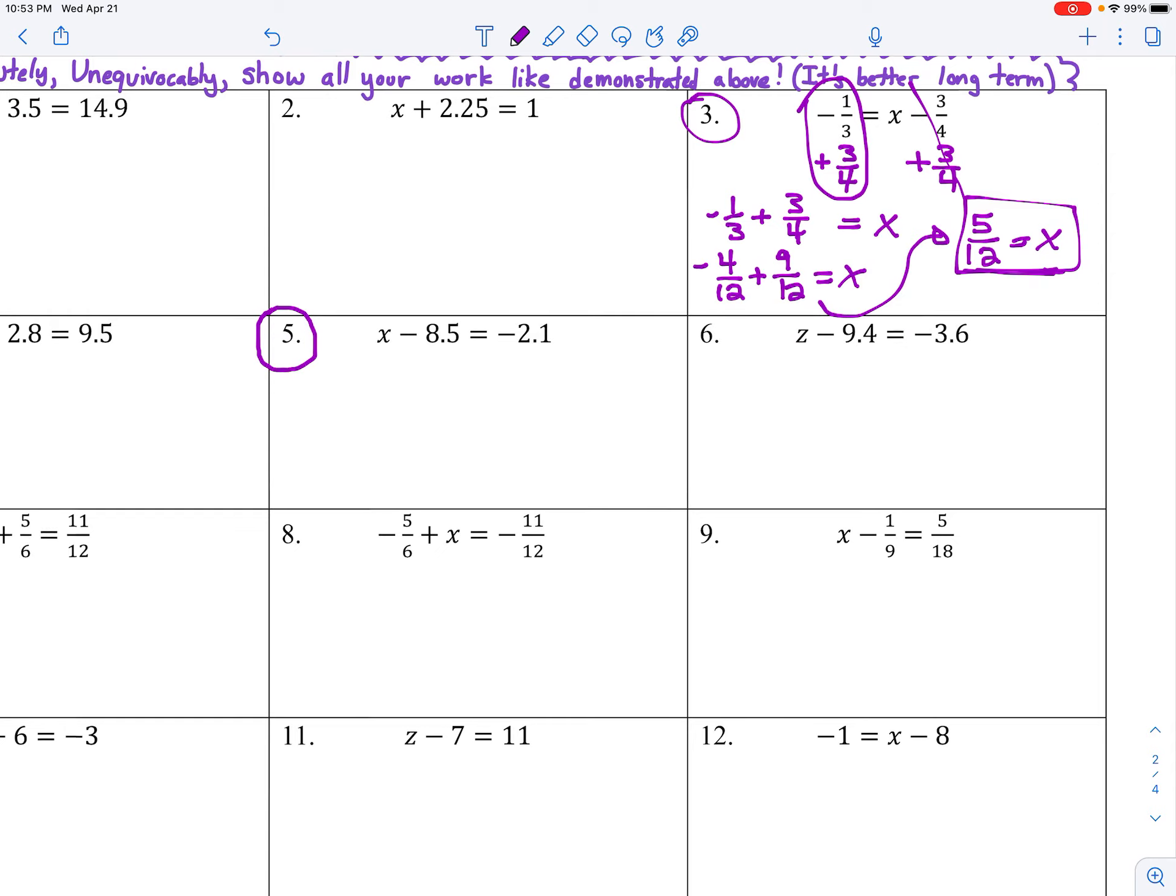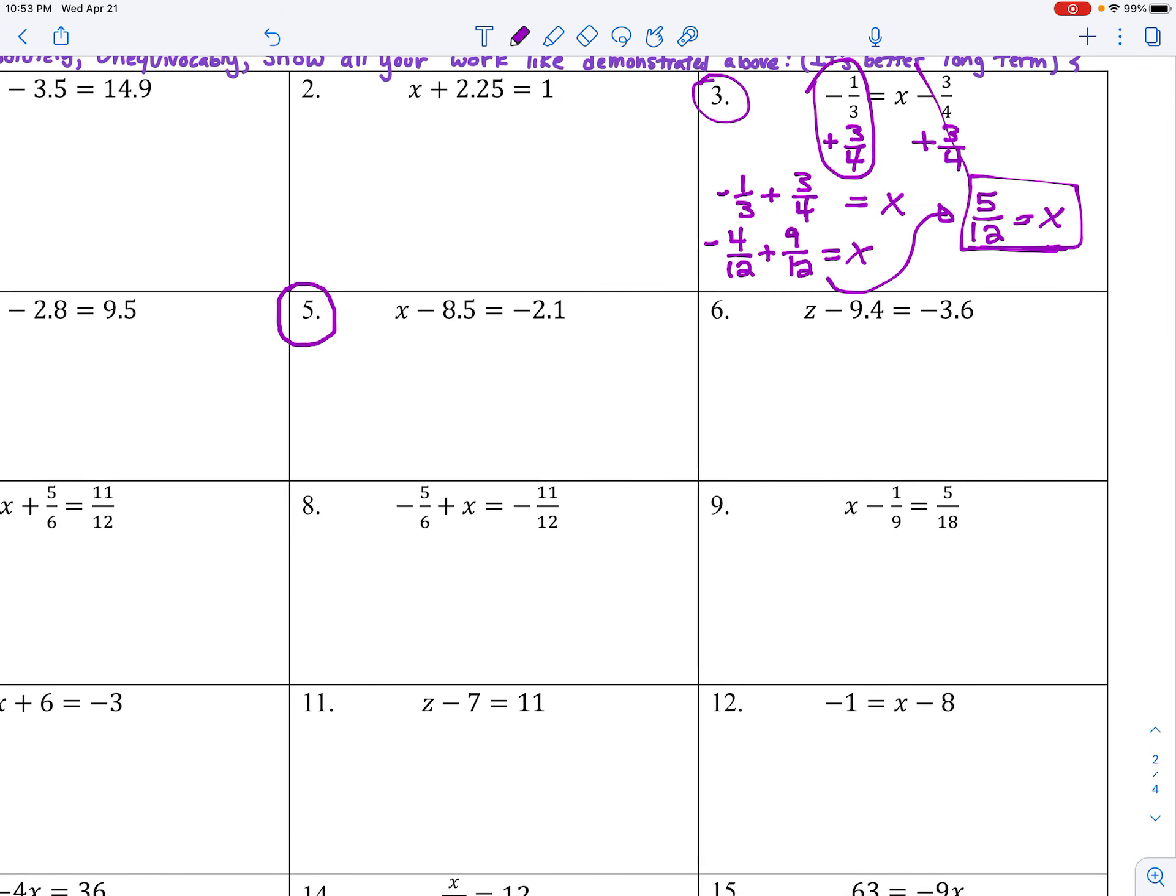Number five. That's decimals. Some number minus eight point five equals negative two point one. Don't guess. Do algebra. Add eight point five. Do the inverse operation of what was done to x. It was subtracted. I'm going to add it. And that means on the left side I put a slash through that to see that negative eight point five plus eight point five leaves me with x all by itself. The isolated variable. That's what you want to do.